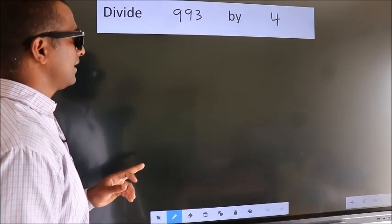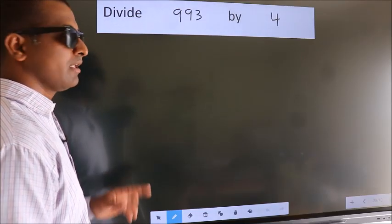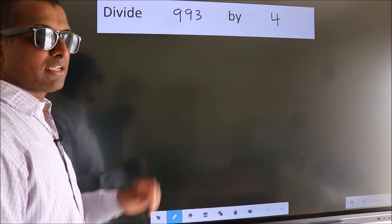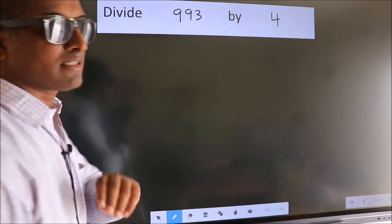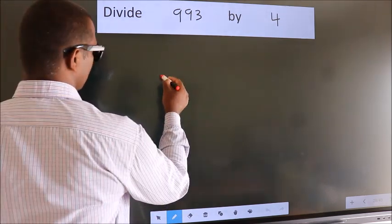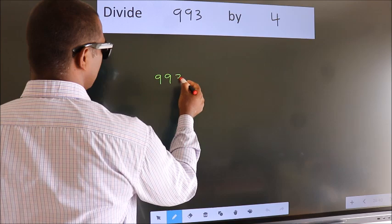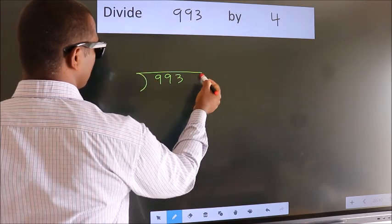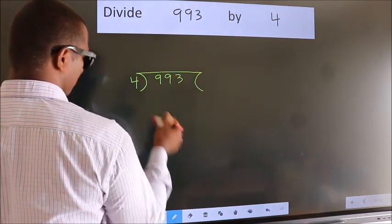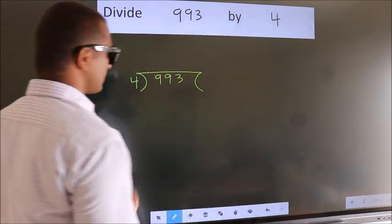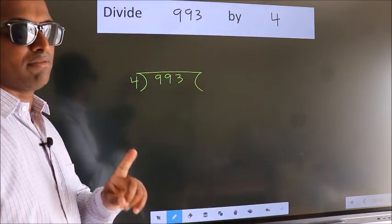Divide 993 by 4. To do this division, we should frame it in this way. 993 here, 4 here. This is your step 1.